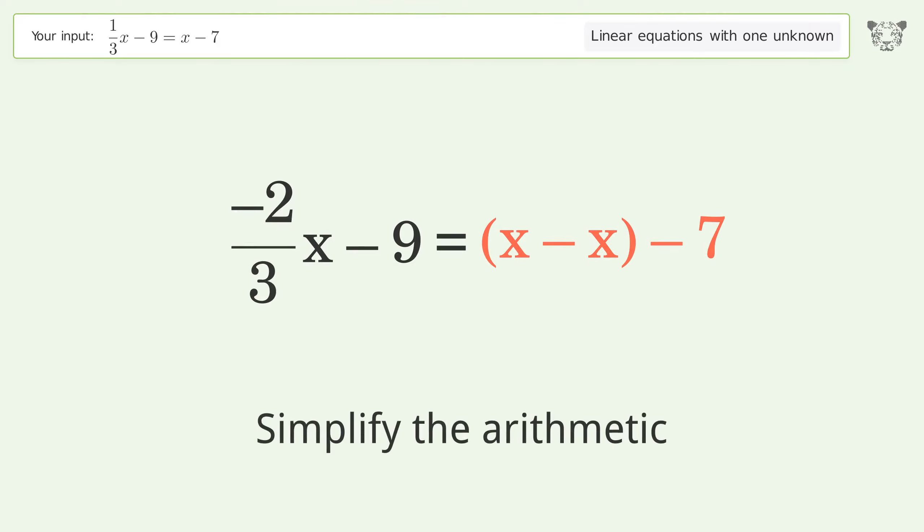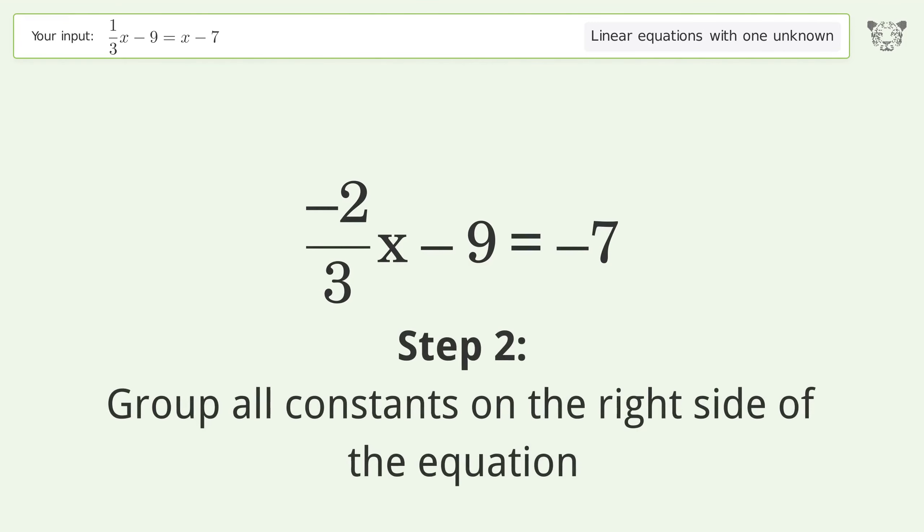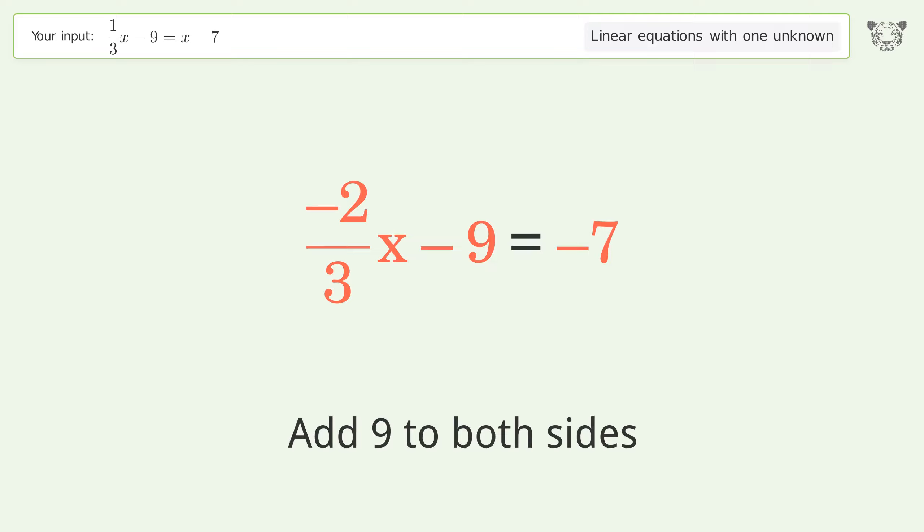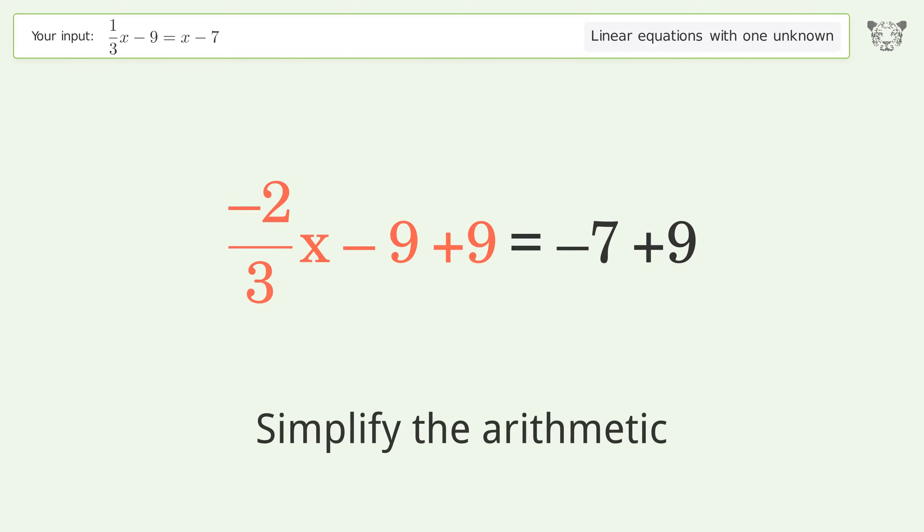Simplify the arithmetic. Group all constants on the right side of the equation, add 9 to both sides. Simplify the arithmetic.